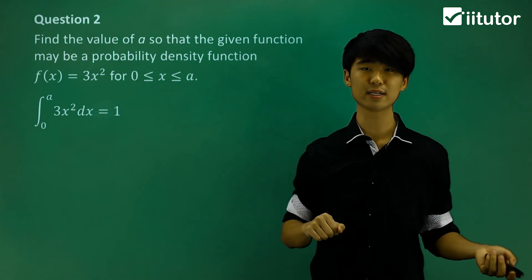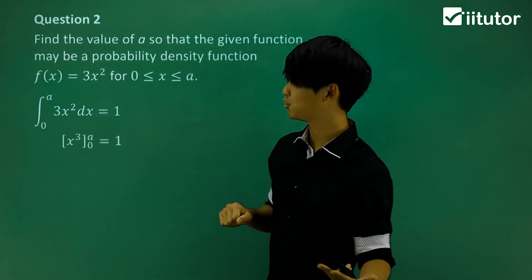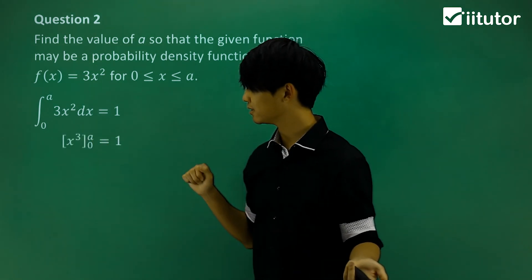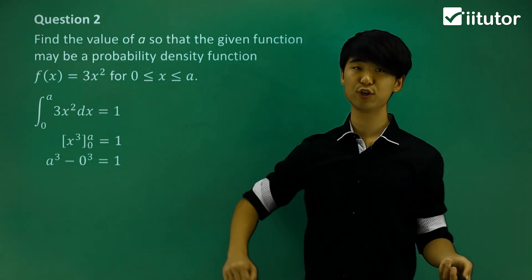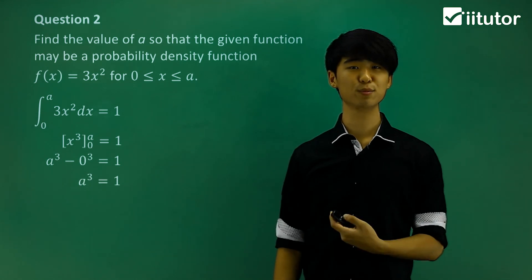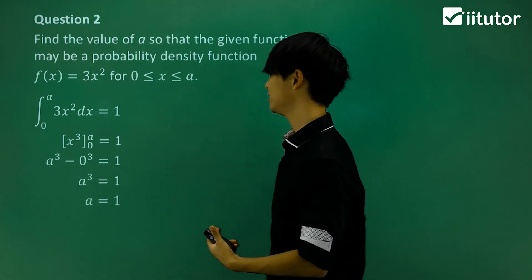So if I integrate 3x squared, I will get x cubed, between 0 and a. That means a cubed minus 0 cubed. 0 cubed is nothing. a cubed equals 1. And finally, a is just 1.